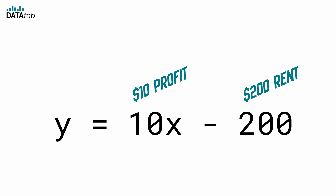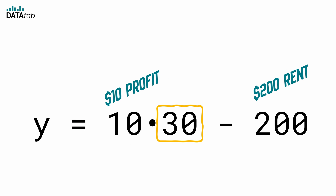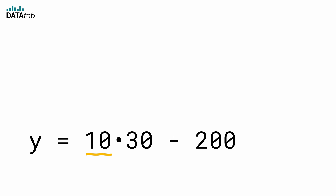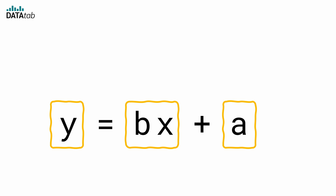Now we can insert the two numbers into the equation. Suppose we want to figure out our profit after selling 30 cakes. In this case, we just enter 30 for X. Our profit Y is 10 multiplied by 30 minus 200, so our profit is $100. The next time you see this equation, remember — it's just a formula for figuring out how much cash you'll have left after selling cakes and paying the rent.